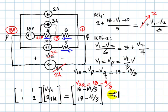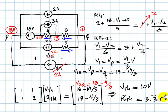And the solution is, no surprise, that VTH is 10 volts and that RTH is 3.3 periodic ohms. The exercise will not be complete until we draw the equivalent circuit. So we do.